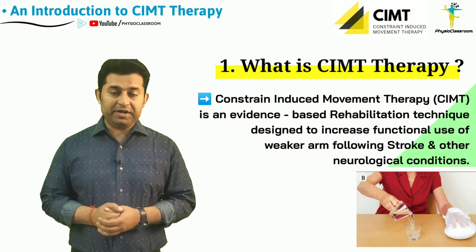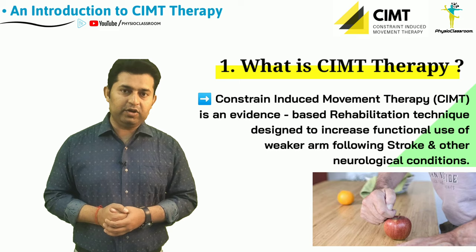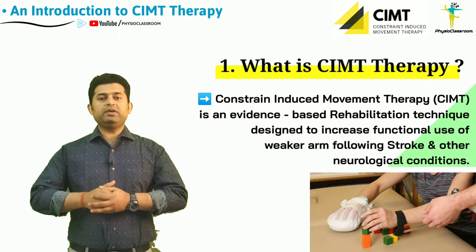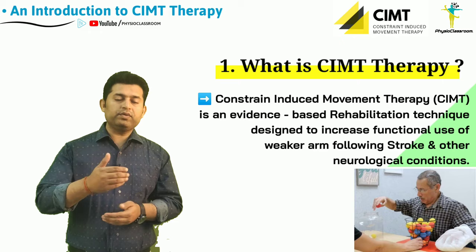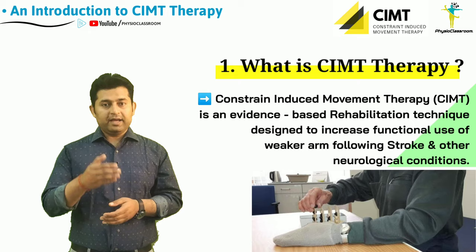CIMT, or Constraint Induced Movement Therapy, can be defined as an evidence-based rehabilitation technique that has been designed to primarily improve the functional usage of the weaker or paralytic arm following stroke or any other neurological condition. In this rehabilitation technique, the functional usage of the weaker or paralytic side upper limb is induced by constraining or limiting the movements of the normal or stronger side upper limb, which is why the technique has been named Constraint Induced Movement Therapy.